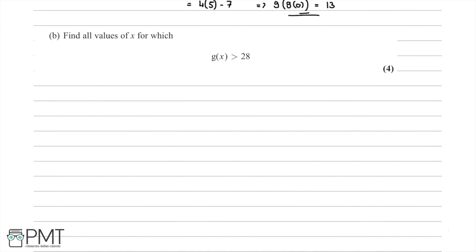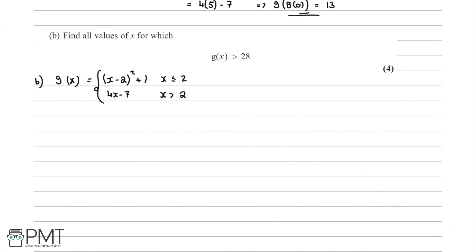In part b we're asked to find all values of x for which g of x is greater than 28. Recalling that g of x is the piecewise function — x minus 2 squared plus 1 for x less than or equal to 2, and 4x minus 7 for x greater than 2 — we solve each piece as an equality first to find critical values, then determine how those relate to the inequality.